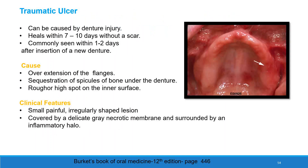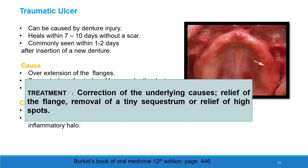Traumatic ulcer. These are caused by denture injury and heal within 7 to 10 days without a scar. They are commonly seen within 1 to 2 days after insertion of a lower denture. Causes may include overextension of the flange or any rough surface area under the denture. Clinical features include small, painful, irregularly shaped lesions covered with a grayish delicate necrotic membrane surrounded by an inflammatory halo. Treatment includes correction of underlying causes, relief of the flange, and removal of any rough surface or bony sequestration.